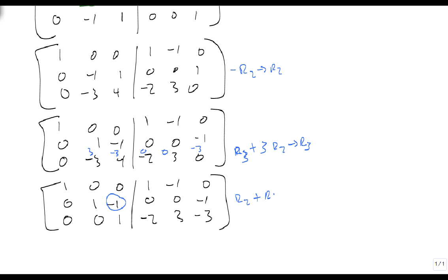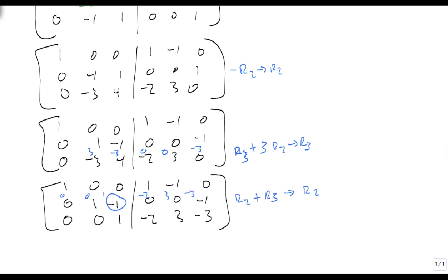Row 2 plus row 3 will get stored in row 2. So that's going to give me 0, 0, 1, minus 2, 3, minus 3. We add all that together.